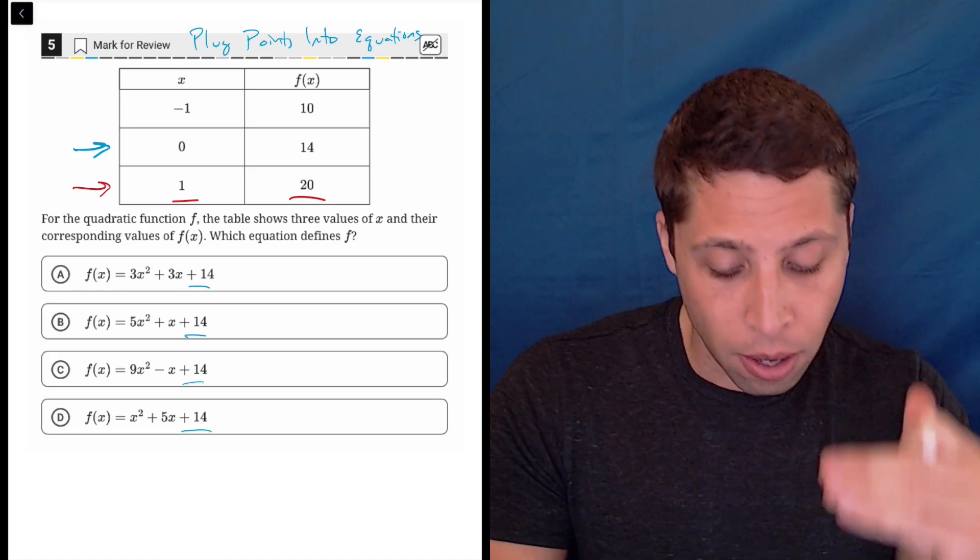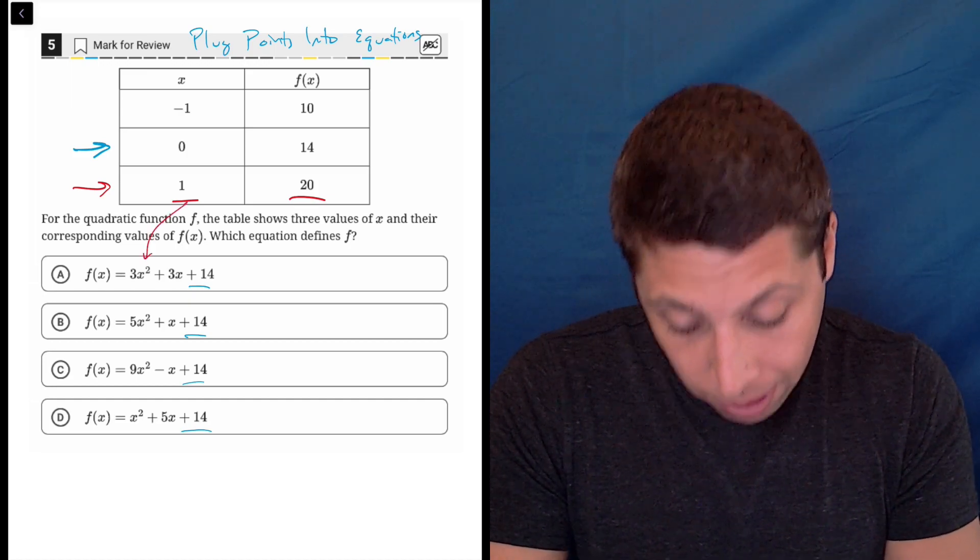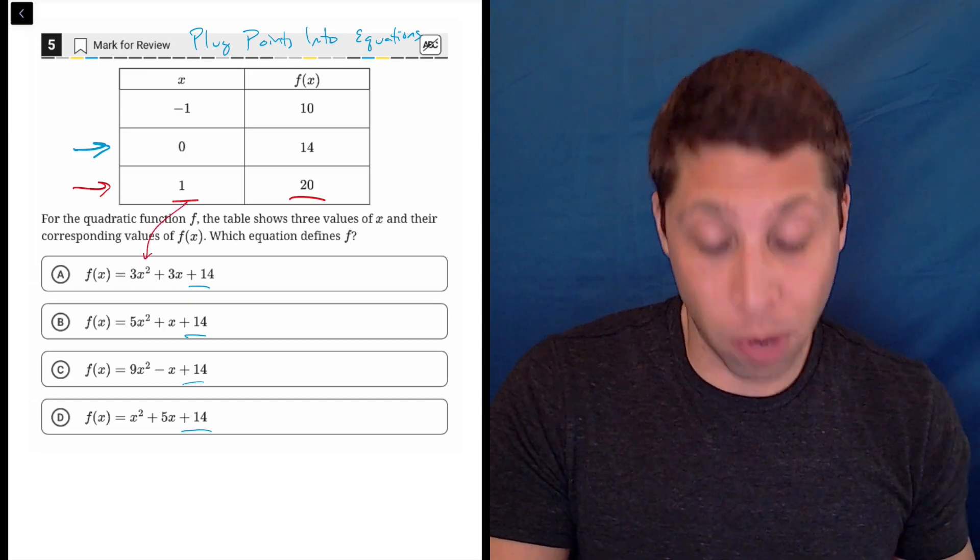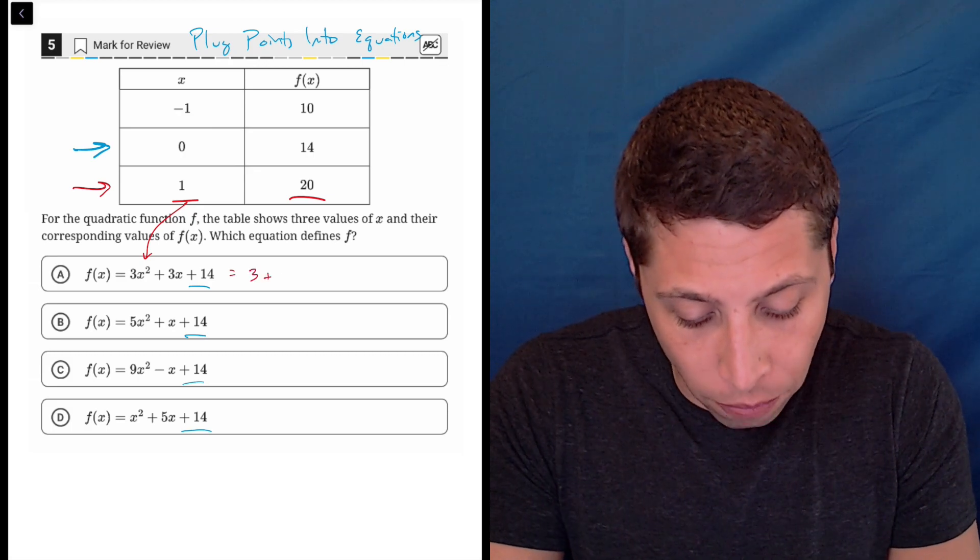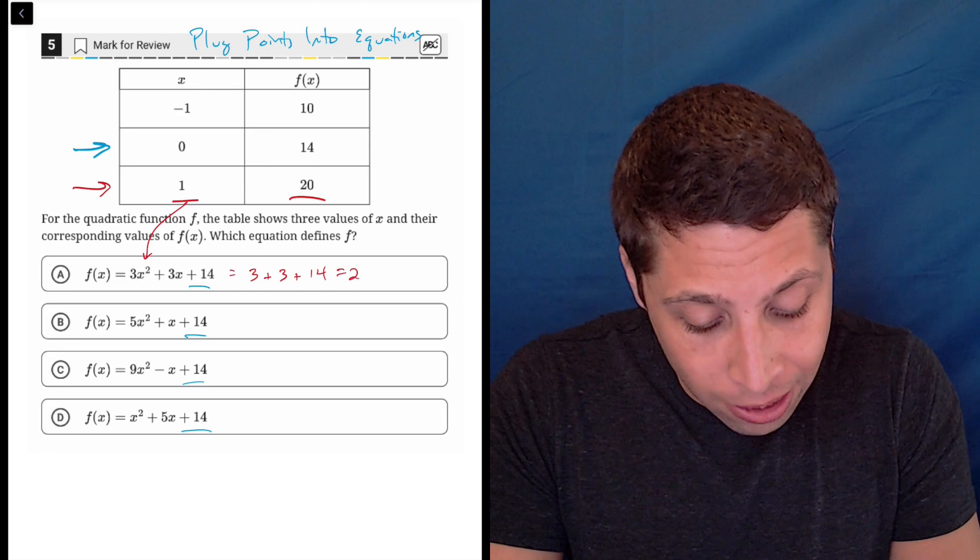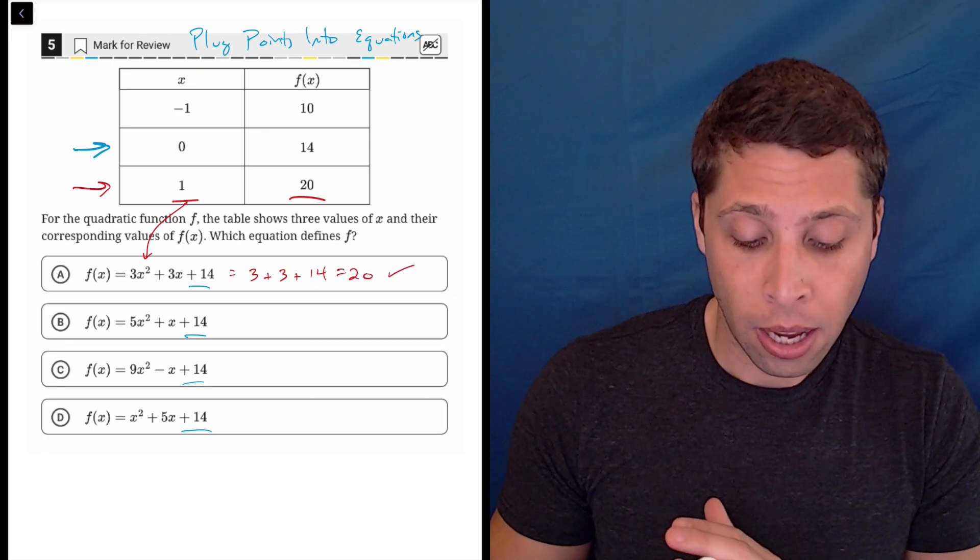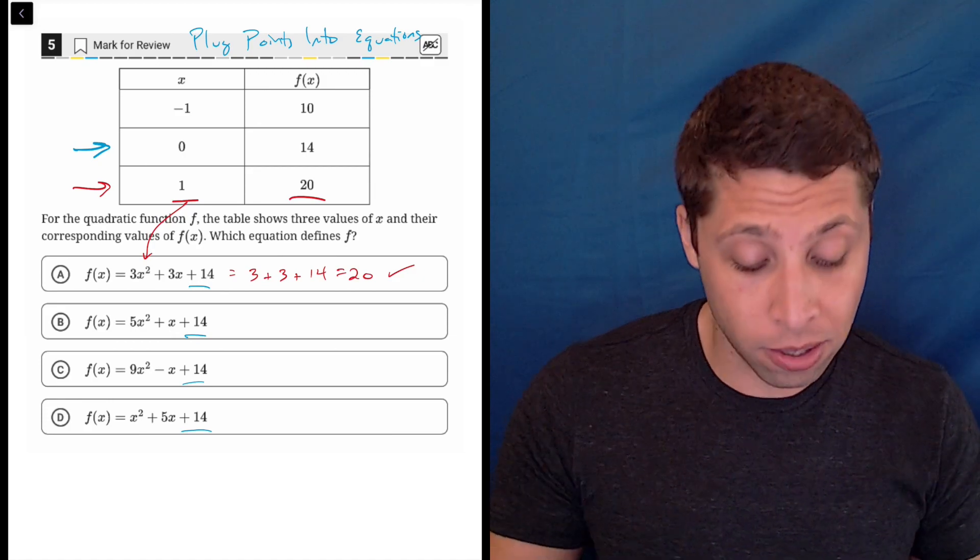So for choice A, 3x squared. If the x were a one, one squared is one, three times one is three. So what's going to happen is just the coefficients are going to matter. So three plus three plus 14, that is 20. So that checks out. Now that doesn't mean that's necessarily the right answer. I have to check all the answer choices and be sure.